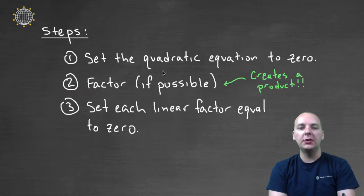And so once your quadratic equation is set equal to zero, then you're going to factor the side that has the polynomial on it. Now this isn't always possible, but if it is, we're going to factor it.